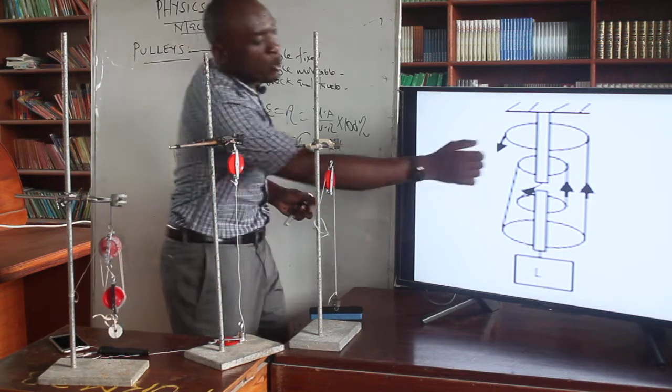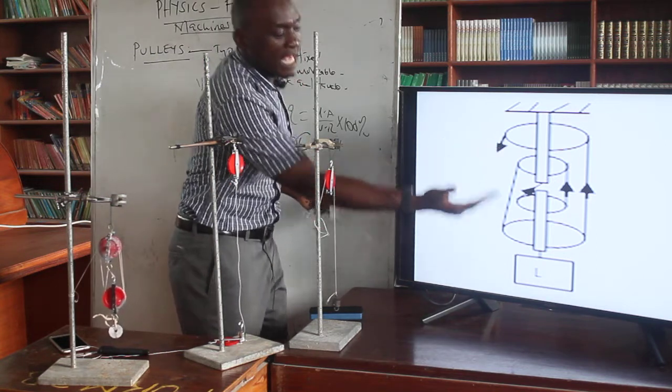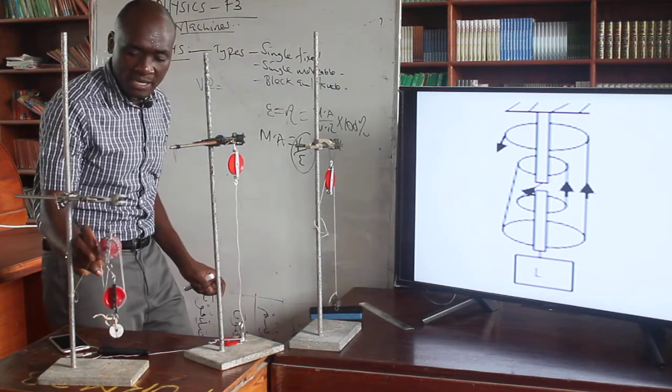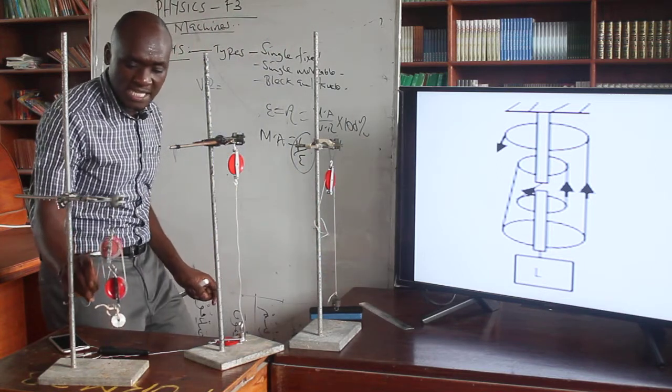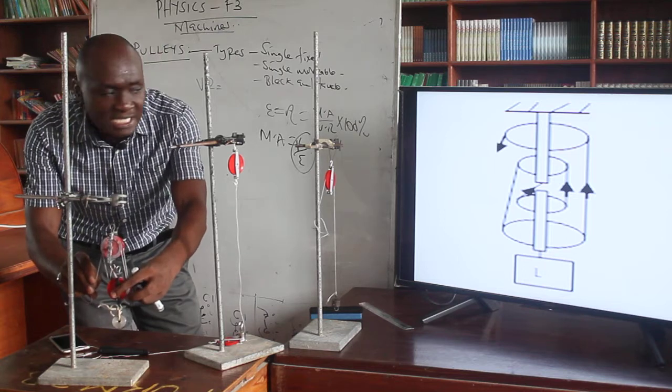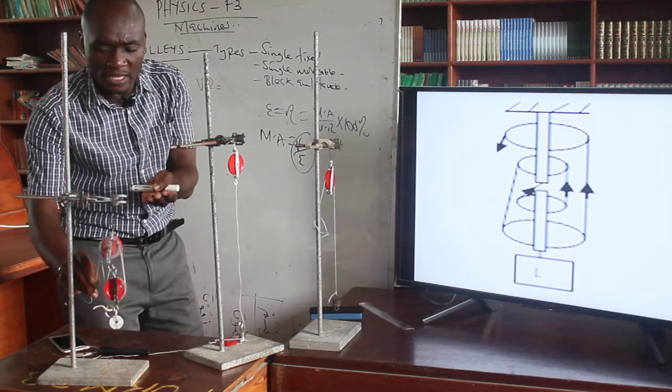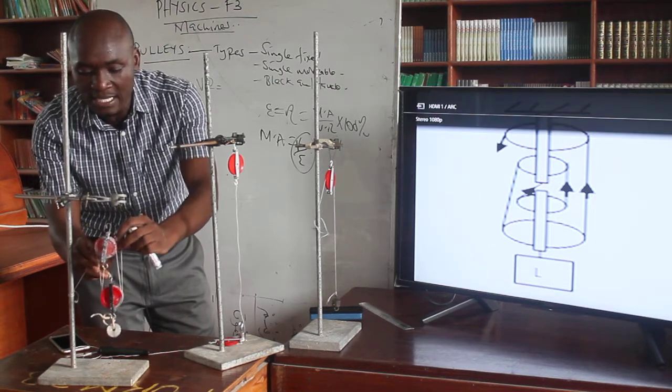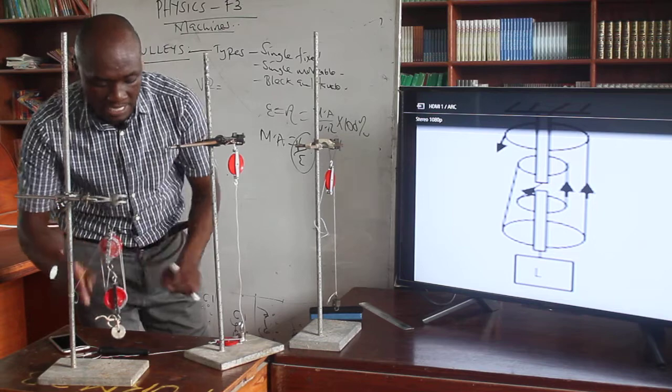That's why as you pull this, the movable part is moving together with the load. But the part that is fixed does not move. That's why we are saying that this is the block and tackle system.